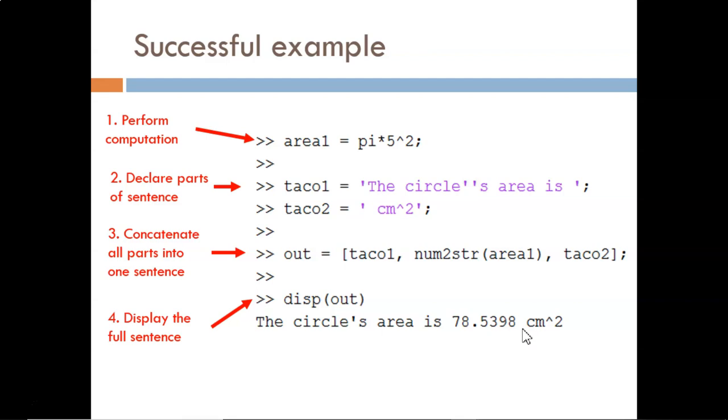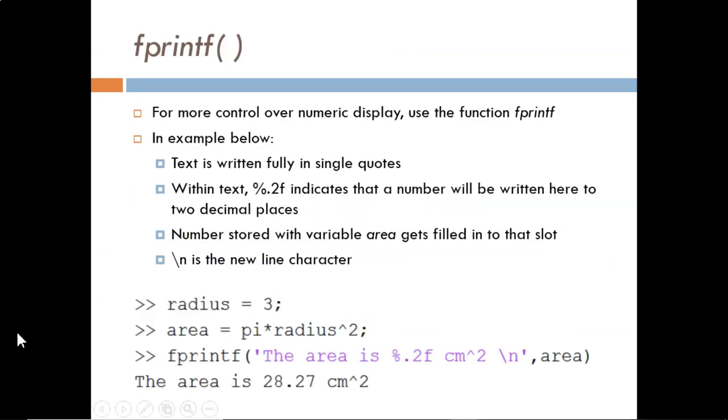Lastly, a little nuance here. If we ever want to include a single quote or apostrophe within a string, we use two single quotes. Without it, MATLAB would interpret the string as stopping at the single quote. More powerful than the disp function is fprintf.